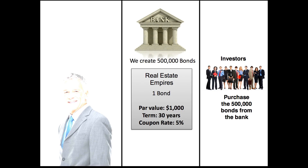When investors hold that bond, they receive the 5% coupon rate — and importantly, the 5% is calculated on the $1,000 par value, not the $1,005 they paid. So they make $50 per year. Bonds are typically paid twice a year, meaning investors receive $25 after six months and another $25 six months later. They keep receiving those $25 payments for the full 30-year term. And at the very end of those 30 years, they receive their $1,000 par value investment back.